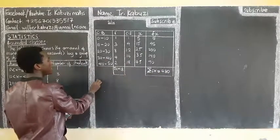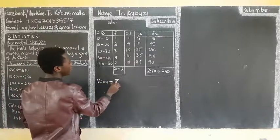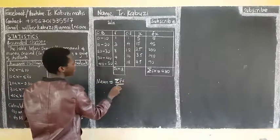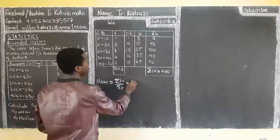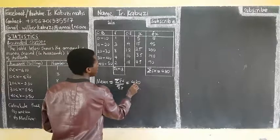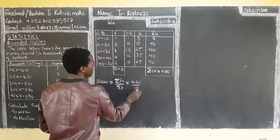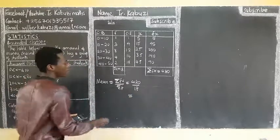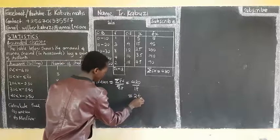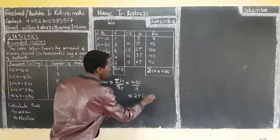So we come here and we get our mean. Our mean is going to be summation fx over summation f. Our summation fx is four eighty over our summation f, which is eighteen. And so the answer we get there is going to be twenty-six point six six six seven.